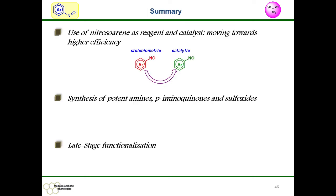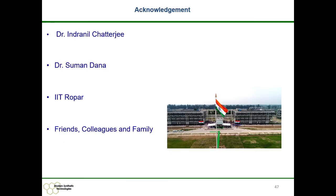In summary, the use of nitrosarene as reagent and as catalyst was showcased here, and a new branch of research can be opened by the catalytic activity of nitrosarene. Using this strategy of nitrosarene in HFIP, the synthesis of potent amines, para-aminoquinones, and sulfoxides was accomplished, and late-stage functionalization was carried out. I would like to acknowledge my supervisor Dr. Indranil Chatterjee, Dr. Sumundana for inviting me to give this presentation, IIT Ropar for research facilities, and friends, colleagues, and family for their support.